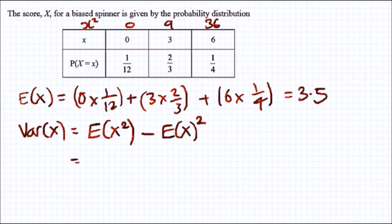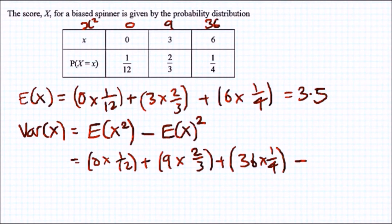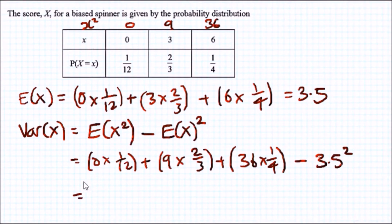Now we repeat the process. For X-squared we calculate: zero times 1/12, plus nine times 2/3, plus 36 times 1/4. Then we subtract the mean squared, which is 3.5 squared. Enter this in your calculator and you should get 2.75. That's it — 2.75.